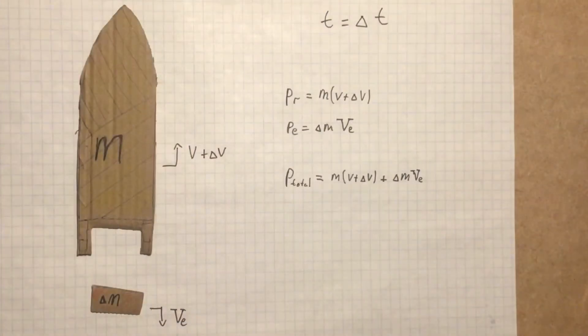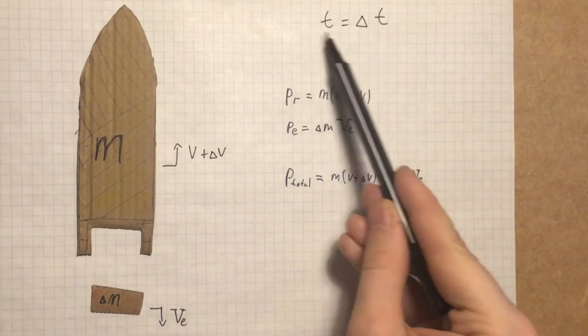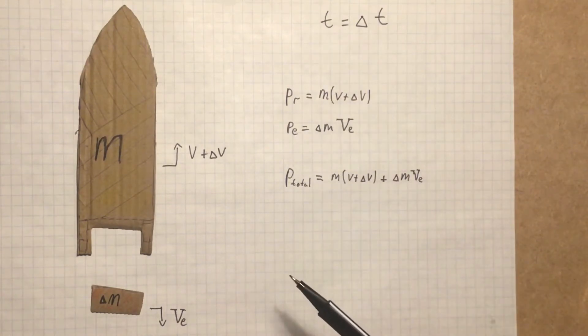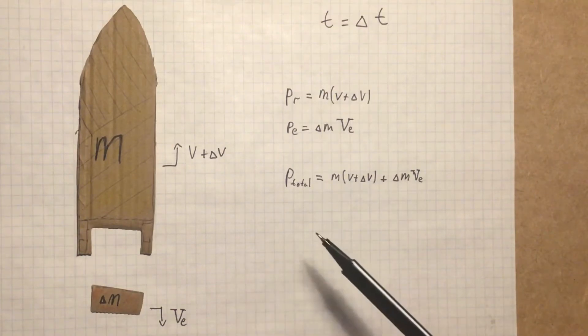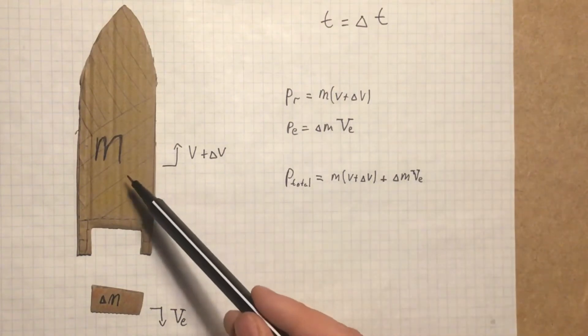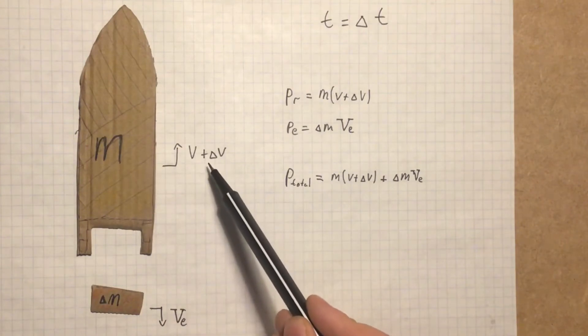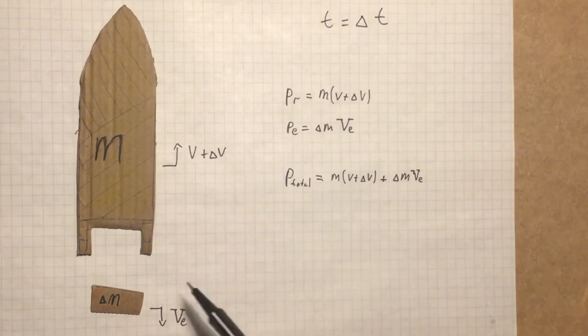Now, let's take a look at what is happening at time t equals delta t. Since mass of the rocket is changing through the process of fuel combustion, mass of the rocket at time delta t will decrease to m and its velocity will increase by delta v. Then, mass of the exhaust will be equal to delta m and we will denote its velocity by v_e.